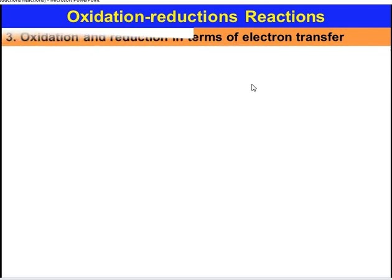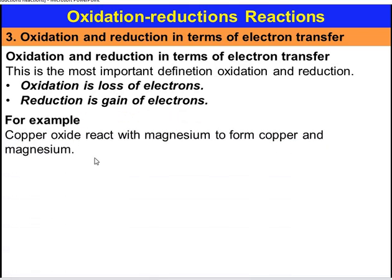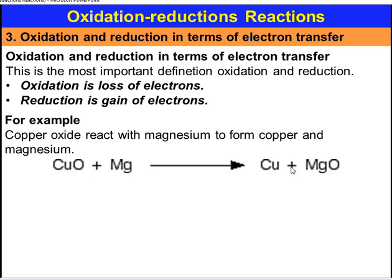The next definition is in terms of Electron transfer. Oxidation is the process in which loss of Electron occurs — when a substance loses Electrons, the process is termed Oxidation. Reduction is the process in which gain of Electron occurs. For example, Copper Oxide reacts with Magnesium to form Copper and Magnesium Oxide. The oxidation state of Copper is plus 2, which is converted to 0, so there is a gain of Electron — therefore Copper is Reduced.